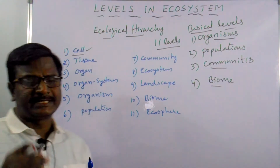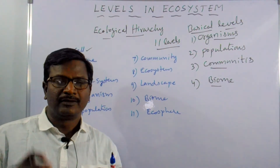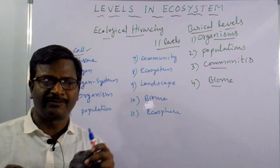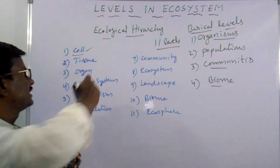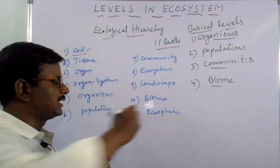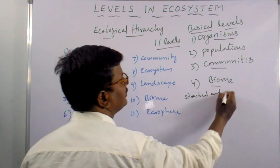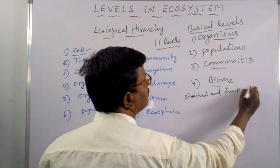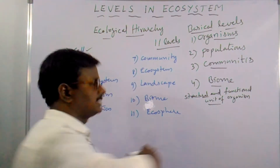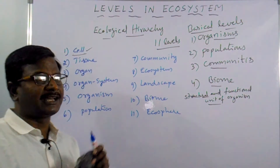Cell is the basic structural and functional unit of an organism. Organisms are made up of many cells. Whatever structure is present in the organism is also present in the cell, and whatever functions are performed by the organism are also performed by the cell. So the cell is called the basic structural and functional unit of the organism, and it is the beginning level of ecological hierarchy.